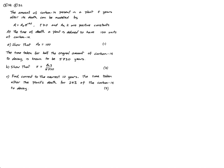Question 5 for HL, 6 for SL. The amount of carbon present in a plant T years after its death can be modeled by this formula. At the time of death, a plant is defined to have 100 units of carbon. Show that A0 equals 100.